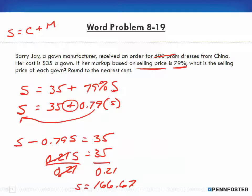Those cancel out. And my S ends up being 166.67. Let me just double check that. 35 divided by 0.21. Right. 166.67.